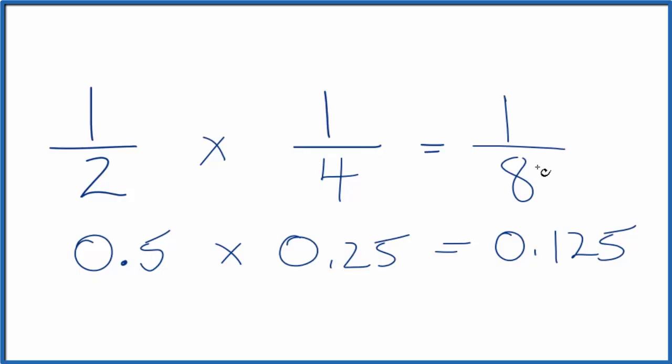If you divide one by eight, you'll end up with 0.125. So we did this first part correctly. One-half of one-fourth equals one-eighth.